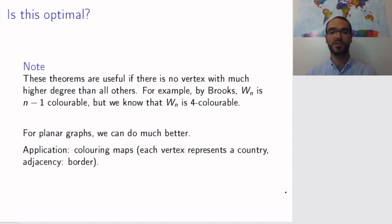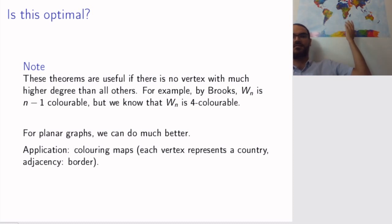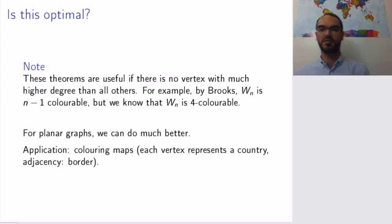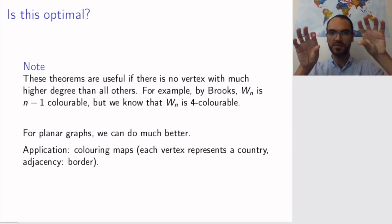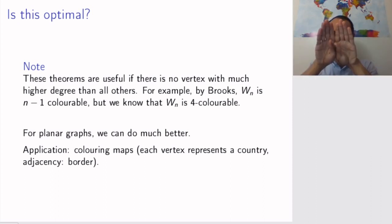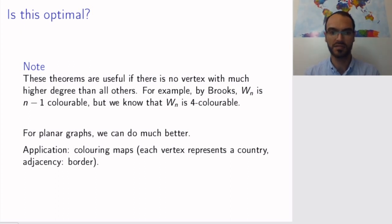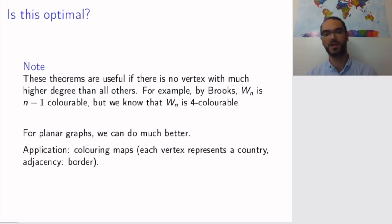This has an application which is that of coloring maps. The map I am sitting in front of here is a very colorful world map. You take a map of, say, the world's countries or the provinces and territories of Canada, and you want to color two regions in different colors whenever they touch each other, so you can actually read the map and regions don't melt together. This can be represented by a graph where each vertex represents a country and adjacency means there is a border in common.